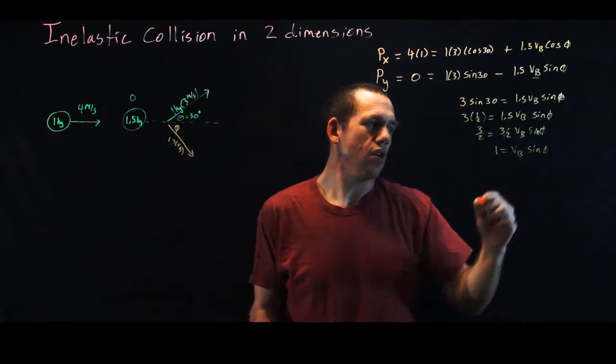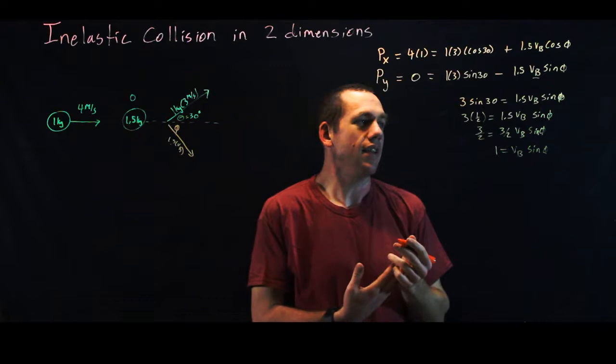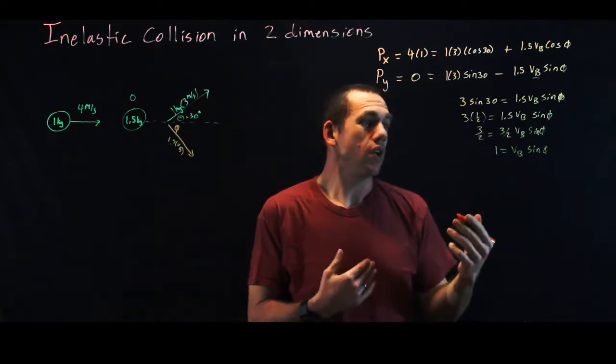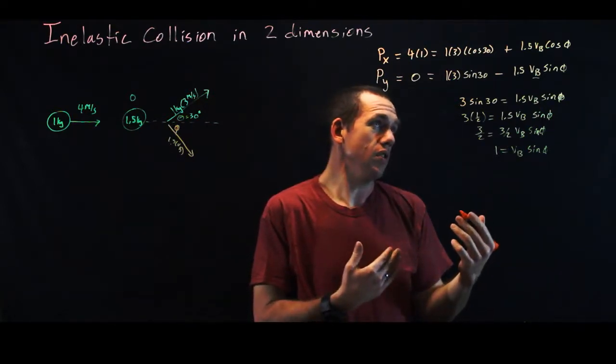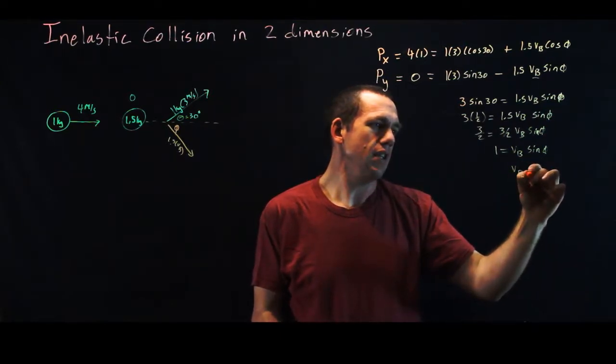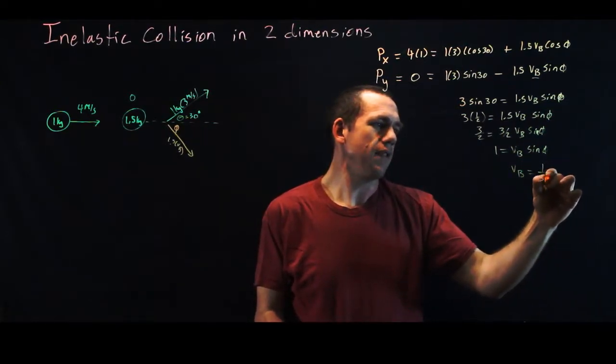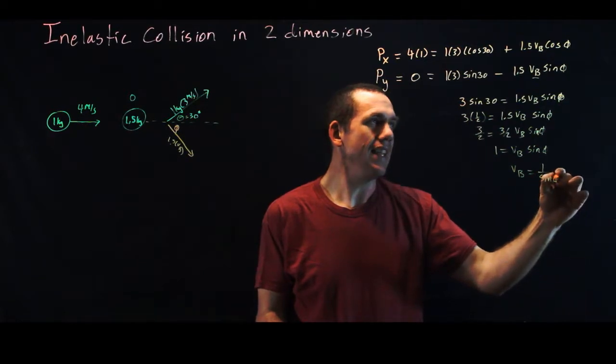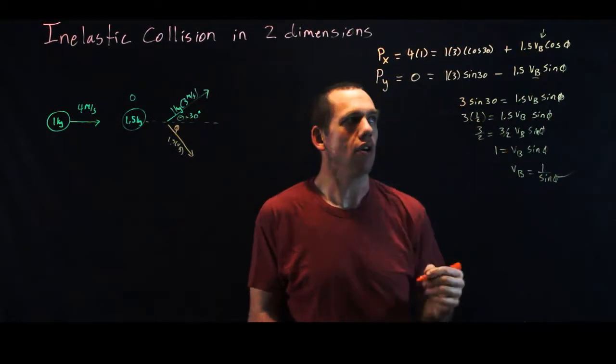Now, there's one equation with two unknowns in it, sine phi and vb. We're going to probably want to make a substitution, and I'm just going to go ahead and solve this for vb, vb equals 1 over sine phi. And now I can take this and plug it back in up here.